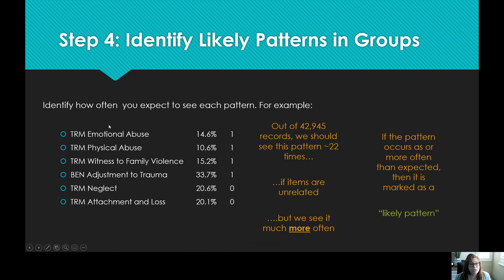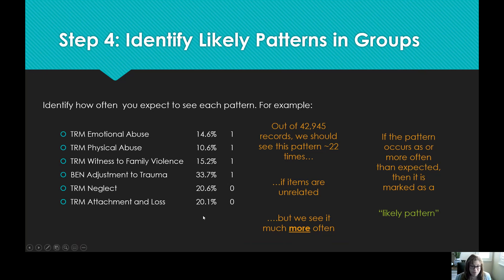Now, we took those ten groups and looked for typical or atypical response patterns. For example, take the first group: emotional abuse, physical abuse, witness to family violence, and adjustment to trauma. If all four of those are actionable and neglect and attachment to loss are not, we can identify if this pattern is occurring more or less often than expected based on that correlation pattern. Statistically, it should appear about 22 times if occurring by chance. But in fact, we see this pattern much more often than 22 times — therefore, it's identified as a likely pattern.